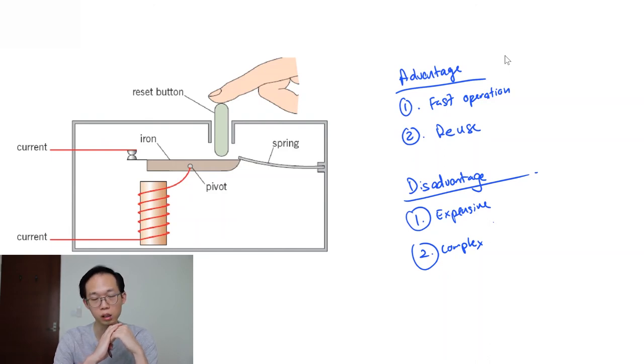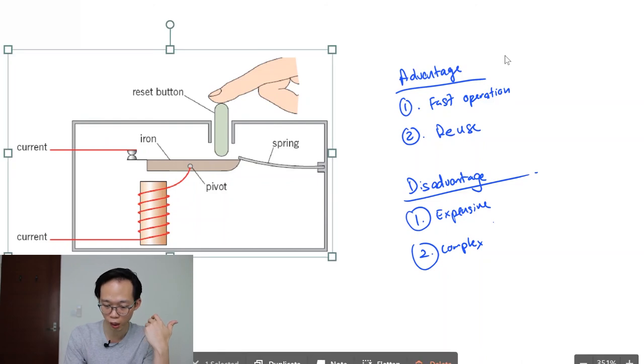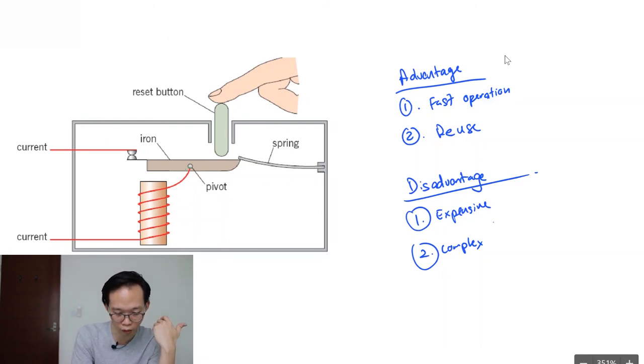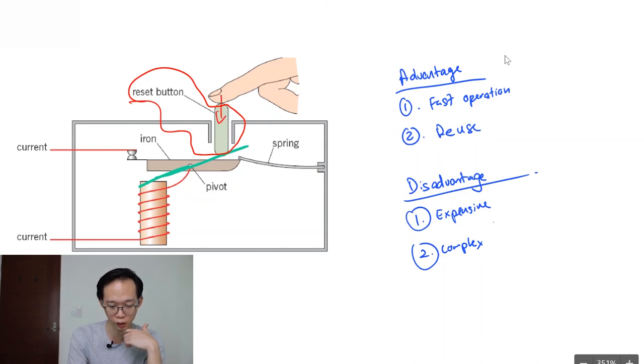The second advantage is that it is reusable. Now when a fuse blows, basically it's destroyed in the process and you have to buy a new one to replace it. For a circuit breaker, what happens is that when the circuit is broken, your iron rod basically just rotates into this position like this. Now look here, there is this thing called a reset button. So obviously when you push downwards on the reset button, what it does is that it pushes this iron piece back into the horizontal position, which can then reconnect the circuit. Now there are of course some disadvantages as well.